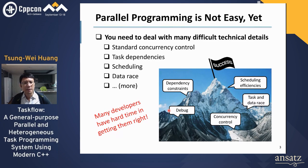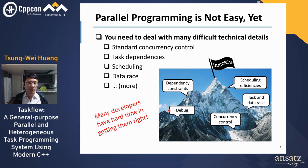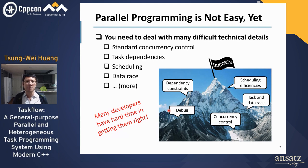However, writing a good parallel program is very challenging because you need to deal with many difficult technical details, such as concurrency control, task dependency, scheduling, and data races. Many C++ developers have a hard time getting them right, especially those who do not have much experience in parallel computing. So it is really important for a library to make sure developers can focus on application-level development as much as possible, instead of dealing with all these difficult parallel utilization details.